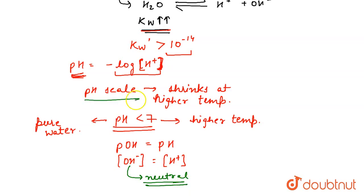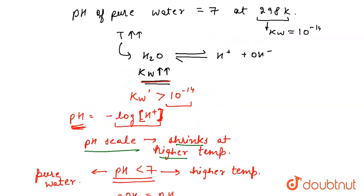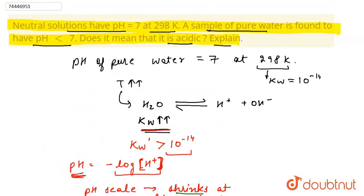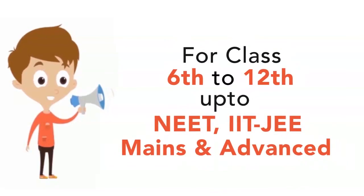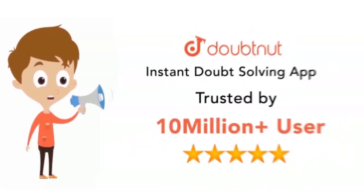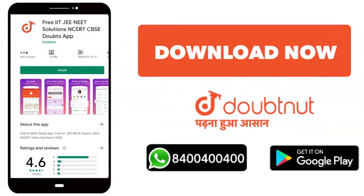It means the pH scale will shrink. So the question asks if pH is less than 7, does it mean it is acidic? It is not so. Our answer is neutral, and we have explained because at higher temperature the pH scale changes. So that's all for this question, thank you. Classes 6 to 12, NEET, IIT, JEE Advanced - 10 million students, download Doubtnut on WhatsApp.